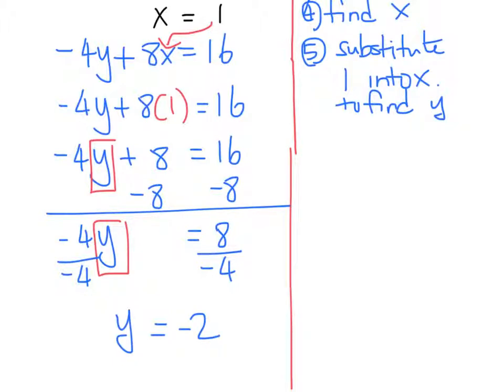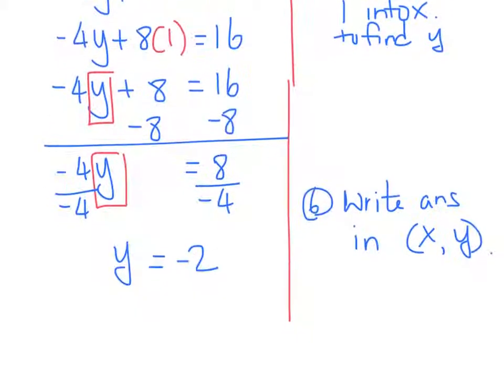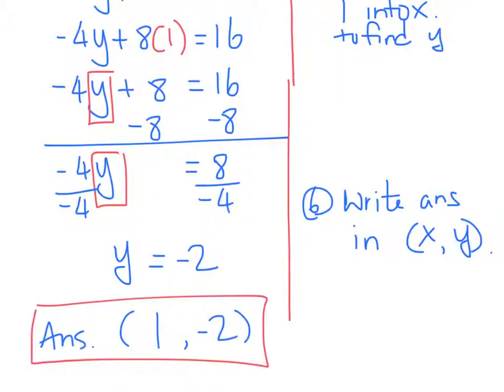So now you've got to write your answer. Step number 6. Write answer in parentheses form like that. So it's going to be x, y. So there you go. What's your answer? What was x? 1. And y was negative 2. There you go. All right? That's it.